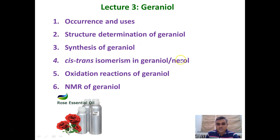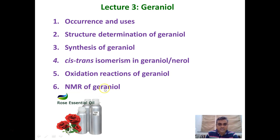Geraniol is a trans isomer and nerol is a cis isomer, so we will discuss the cis-trans isomerism between these two molecules. Geraniol is a typical allylic alcohol containing two double bonds, and therefore its oxidation reactions are very interesting. We will discuss a few oxidation reactions of geraniol, and at the end we will discuss the 1H as well as C13 NMR data of geraniol.